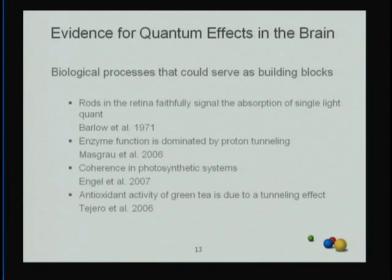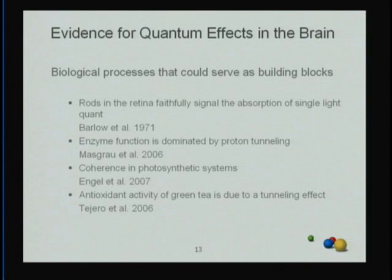Let's move to more specific building blocks — processes of the style we could use to build the quantum box system. First, it's well understood that the retina is so sensitive that it can faithfully signal the absorption of a single photon. Numerous papers show this. For the decoding process — reading out the quantum box solution — we have neurons sensitive enough to do that.